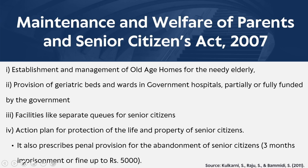The Maintenance and Welfare of Parents and Senior Citizens Act was passed in 2007 and by 2010 was notified by 22 states and in almost all union territories. It enables senior citizens to claim maintenance of up to Rs. 10,000 per month from their children and specifies the claim procedures.